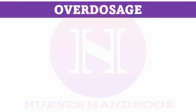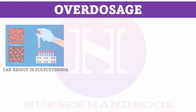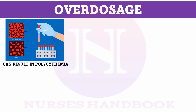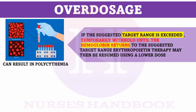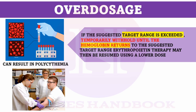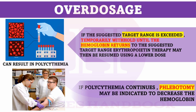What is to be done in case of overdosage? Overdosage can result in polycythemia. So check for hemoglobin levels, and if it is more than the targeted range, hold injection erythropoietin until the hemoglobin levels return to normal. Then it can be resumed at a lower dosage. If polycythemia continues, phlebotomy may be done.